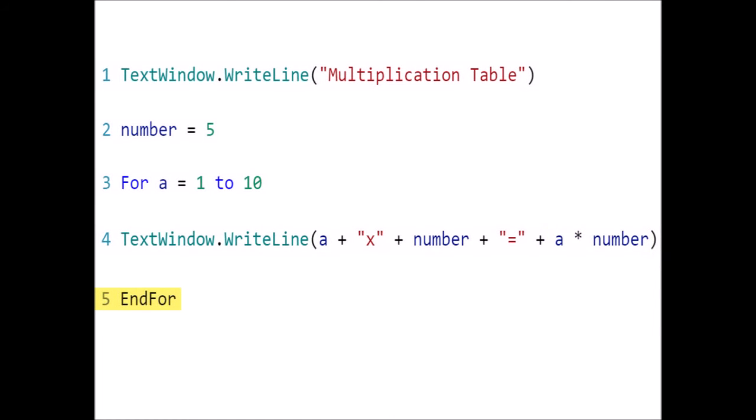Line 5 ends the for loop. Note that the text within the double quotes appears the same way in the result.